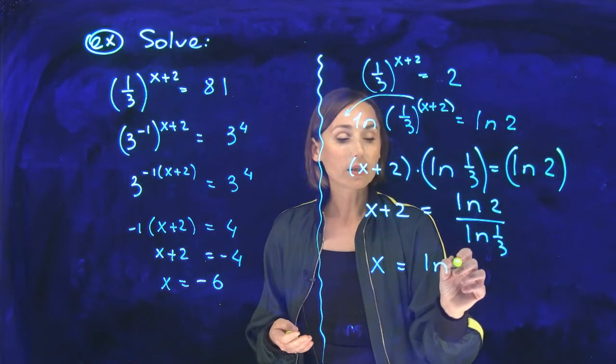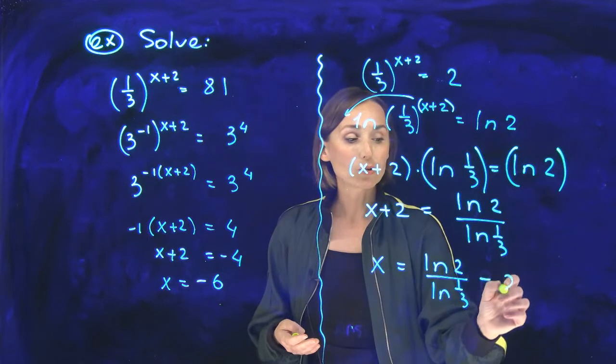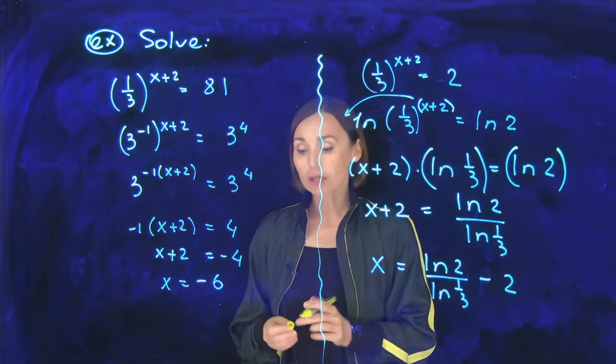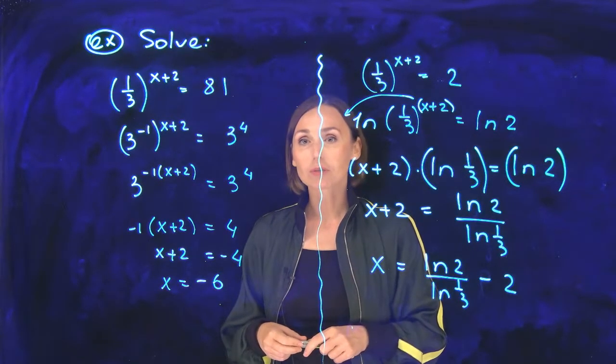x equals ln of 2 over ln of one-third minus 2. If you need to get the answer in decimal form, please use a calculator and get the decimal approximation.